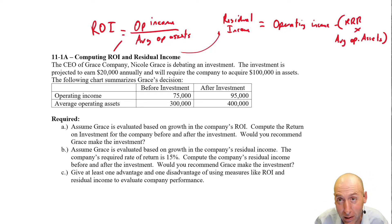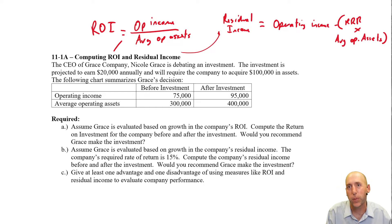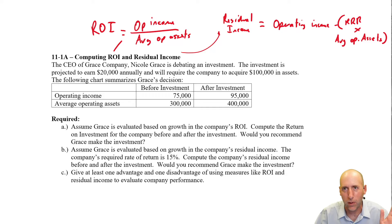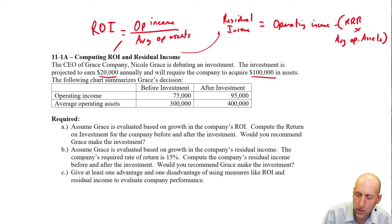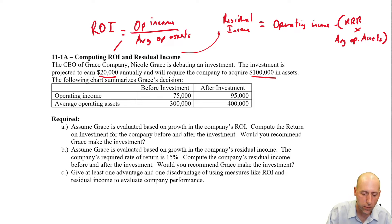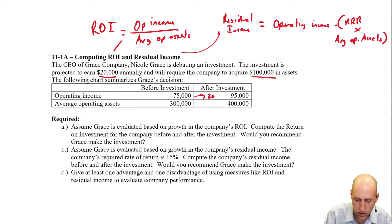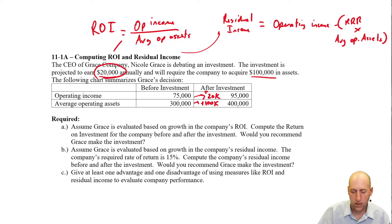Let's read the question. The CEO of Grace Company, Nicole Grace, is debating an investment — not like buying stock, but opening a new shop or business line. The investment is projected to earn $20,000 per year and will require the company to acquire $100,000 in operating assets. Before the investment, she expects $75,000 in operating income using $300,000 in operating assets. After the investment, that becomes $95,000 in income and $400,000 in total assets.